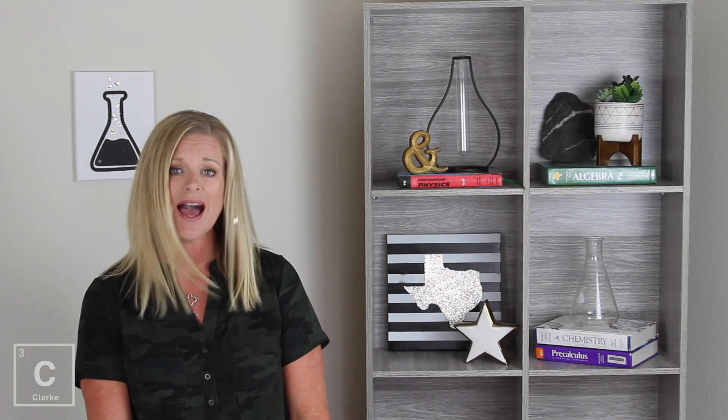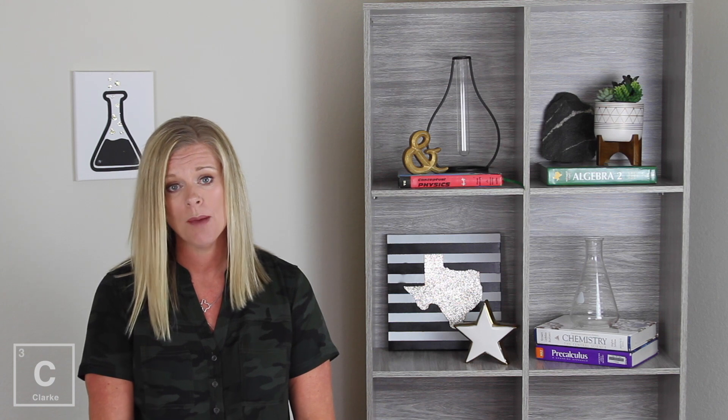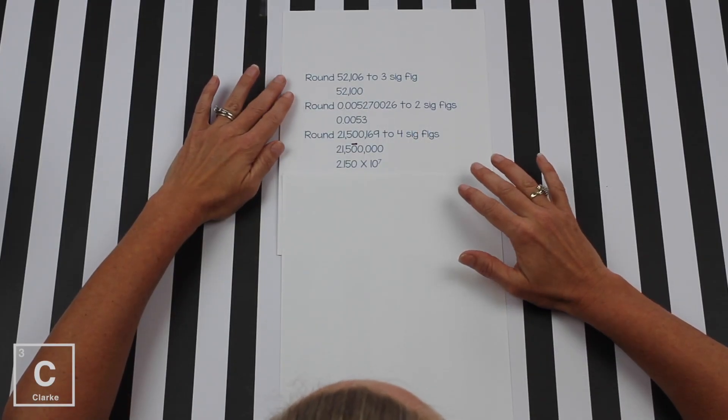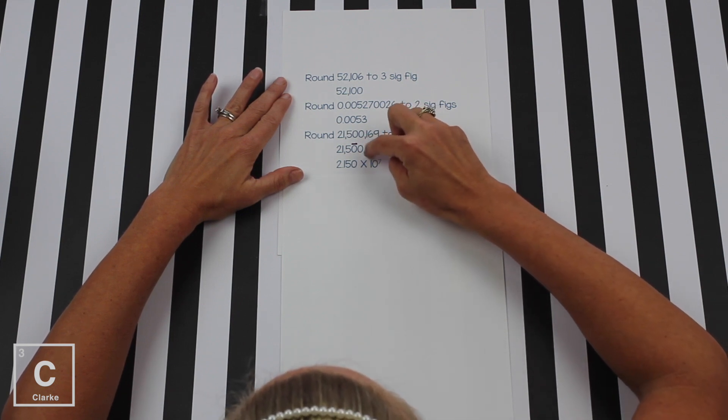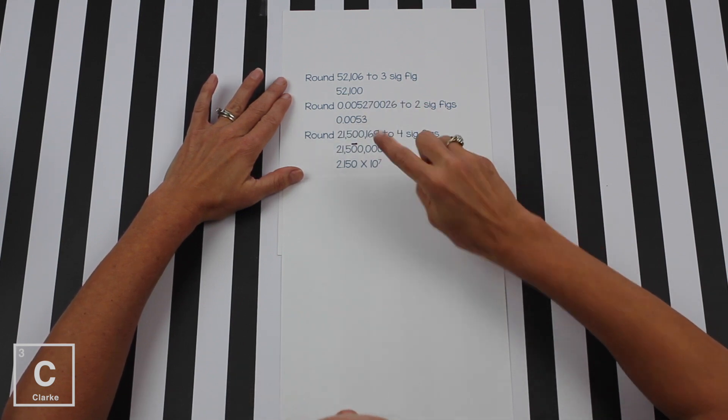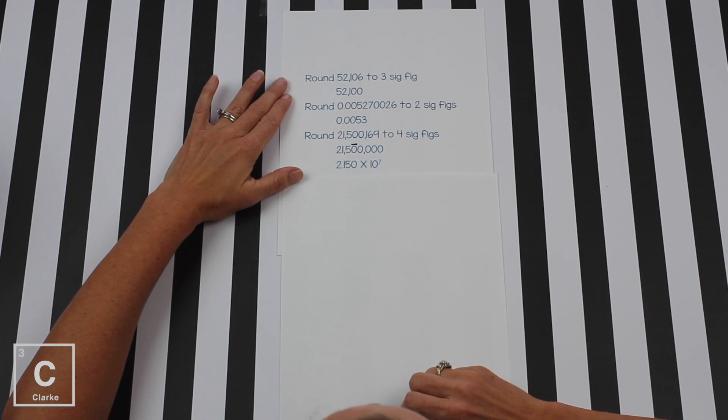Or if we don't like that method, we could always change our number to scientific notation. That's a tip. If you're having a hard time rounding, change your number to scientific notation. It makes it so much easier. I know. Crazy, huh? Using scientific notation is going to make something easier. It does though, I promise. Because remember, all the numbers in front of the X are significant. So if we want four SIGFIGS, we put four numbers in front of the X and then we get four SIGFIGS. And then we moved our decimal. One, two, three, four, five, six, seven. So 2.150 times 10 to the 7.